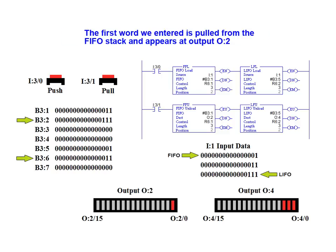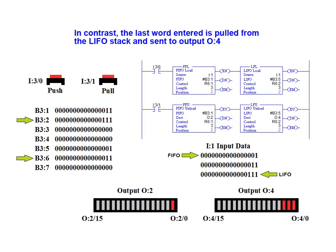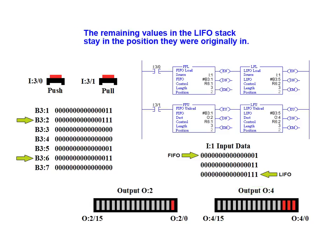The first word we entered is pulled from the FIFO stack and appears at output O:2. The remaining values stored in the FIFO stack have moved up one address location. In contrast, the last word entered is pulled from the LIFO stack and sent to output O:4. The remaining values in the LIFO stack stay in the position they were originally in.